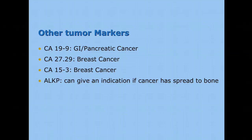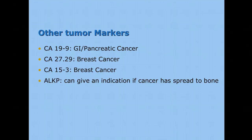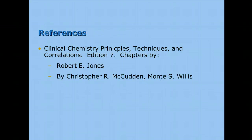A couple other tumor markers to know: CA-19-9 can indicate GI or pancreatic cancer; CA 27-29 and CA 15-3 can indicate breast cancer. Another important one is alkaline phosphatase — elevated levels can mean cancer has spread to the liver or especially the bone. For example, in children with leukemia, all those blast cells growing out of control can cause the bone to actually spread and break, increasing the alkaline phosphatase level. This completes the section on tumor markers. Have a great day!